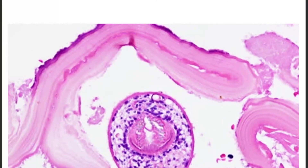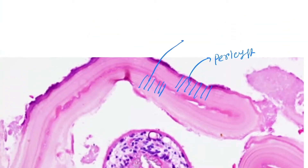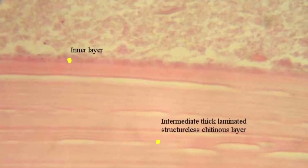Now let's see the histopathological slide. Here it is. This is the pericyst, and this is the intermediate layer. This layer here is called the endocyst.